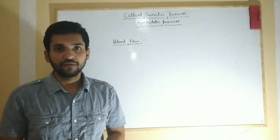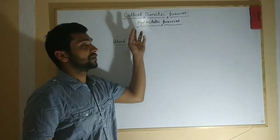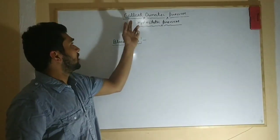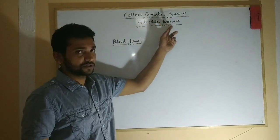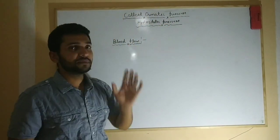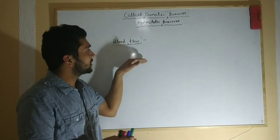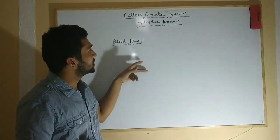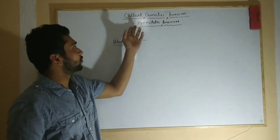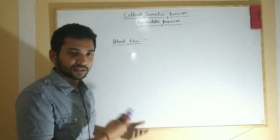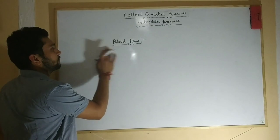Hello everyone, today's video is about vascular pressure and interstitial pressure — mainly two pressures: colloid osmotic pressure and hydrostatic pressure. These both pressures are present in the blood vessels and between the blood vessel and the interstitial fluid during fluid exchange. I'll try to discuss both of them.